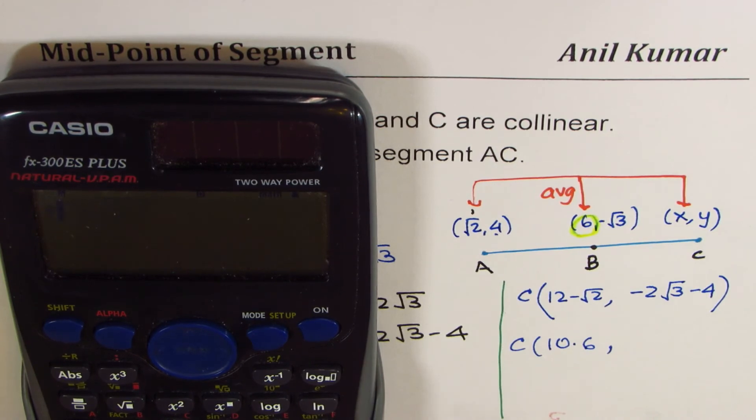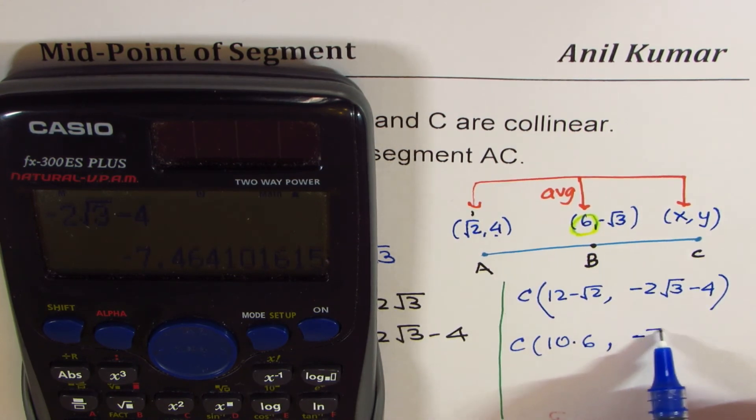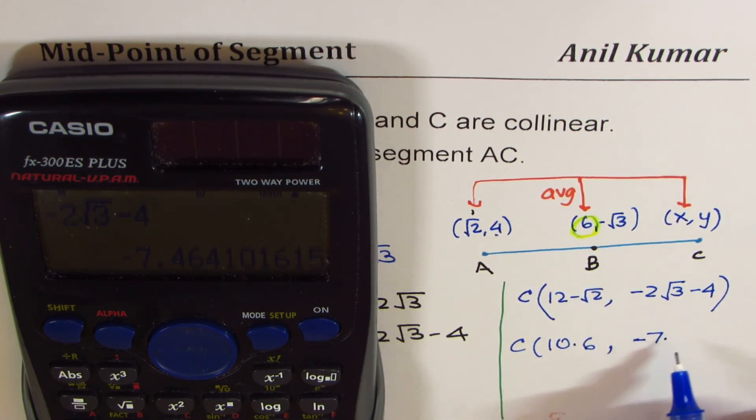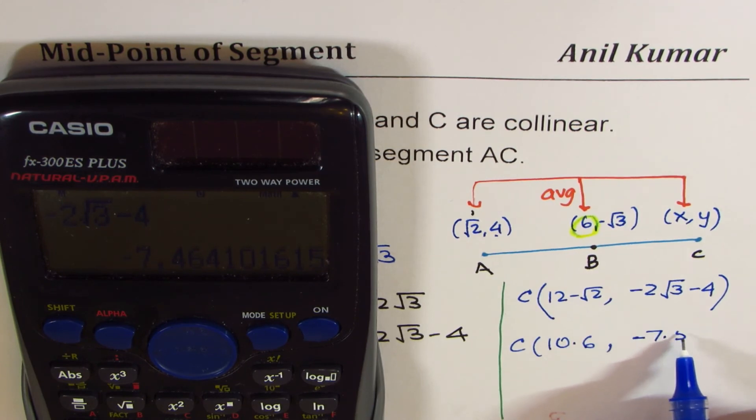The other value is -2 × √3 - 4, which equals in decimals -7.46. I'll write this as -7.5.